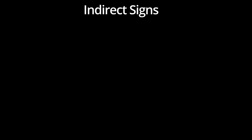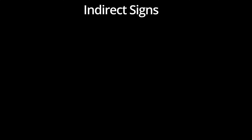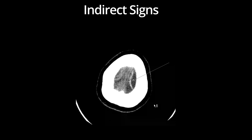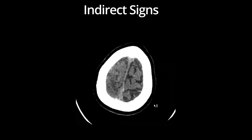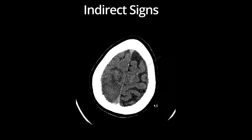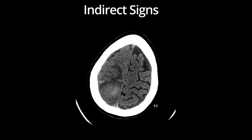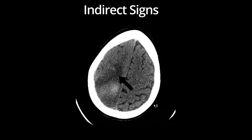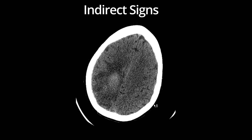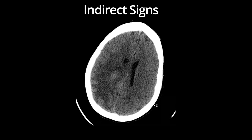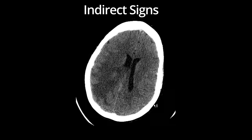Here's an example of hemorrhagic transformation of a venous infarct in a patient with known sagittal sinus thrombosis. As we scroll down, notice the small thrombosed and hyperdense cortical veins as marked by the arrows. As we scroll down further, there is a large area of parenchymal hemorrhage in the posterior right frontal and parietal lobes. Notice the extensive vasogenic edema involving the surrounding white matter. This is a typical site of hemorrhagic transformation of a venous infarct from thrombosis of the superior sagittal sinus and associated cortical draining veins.